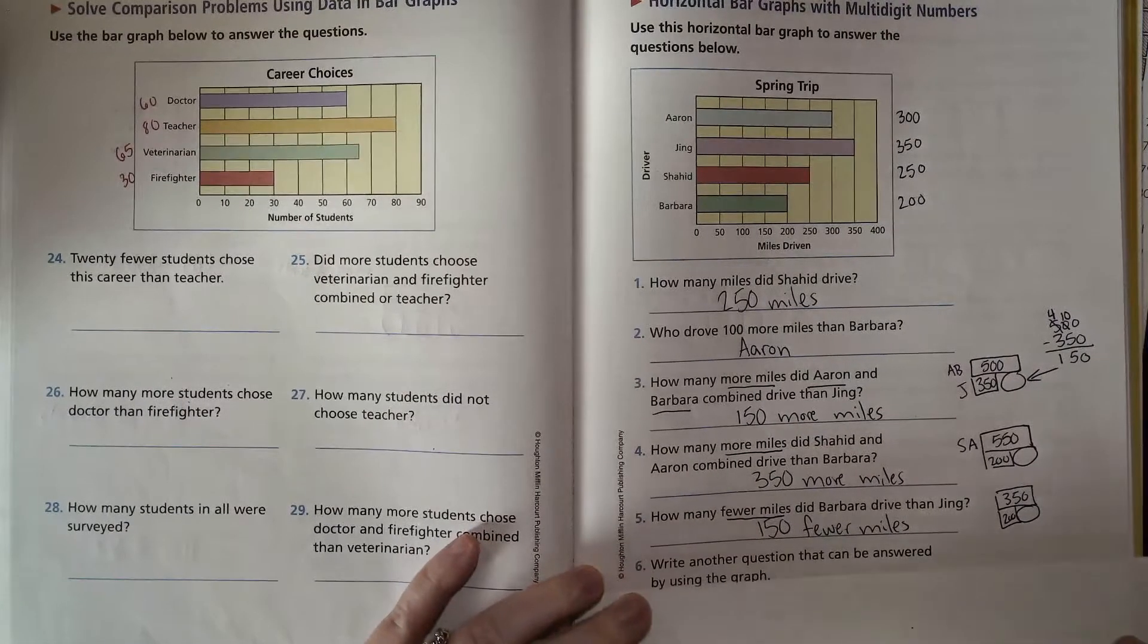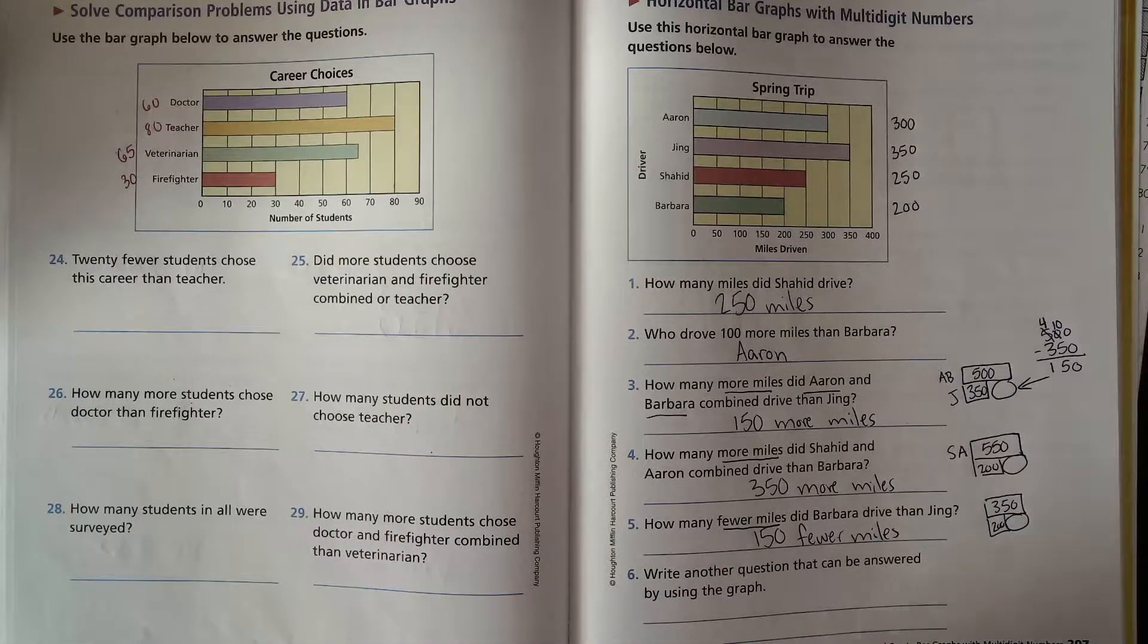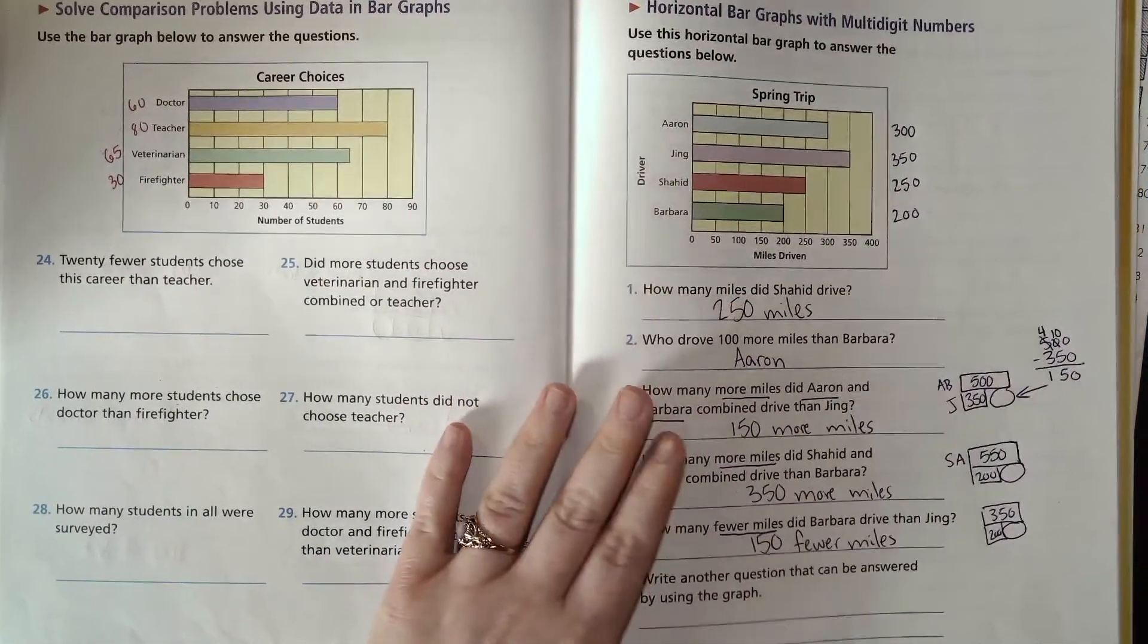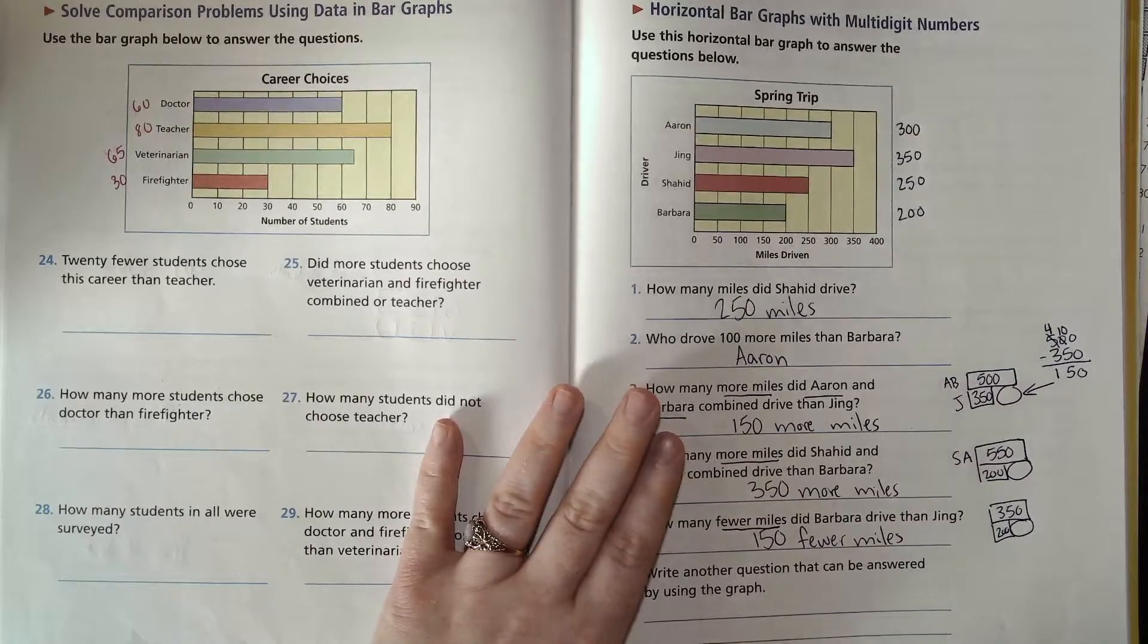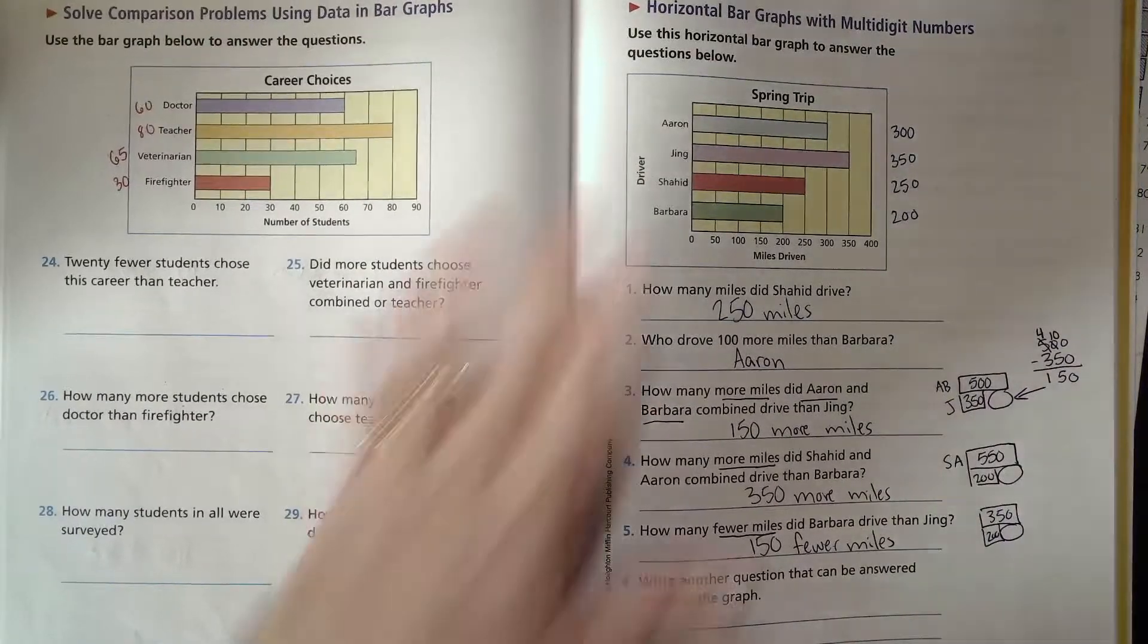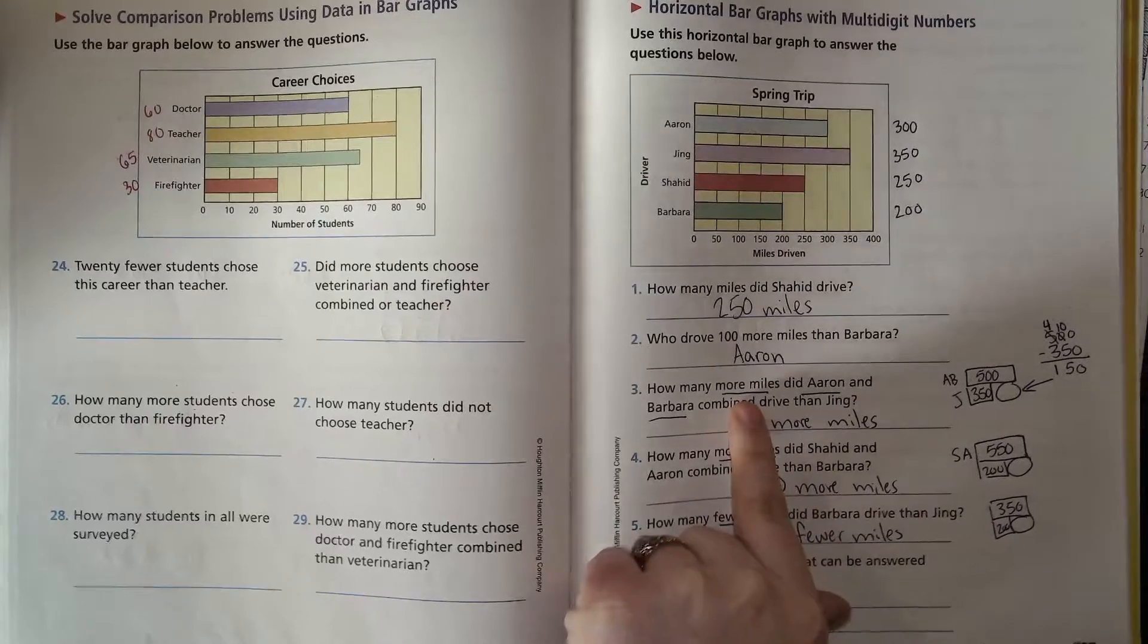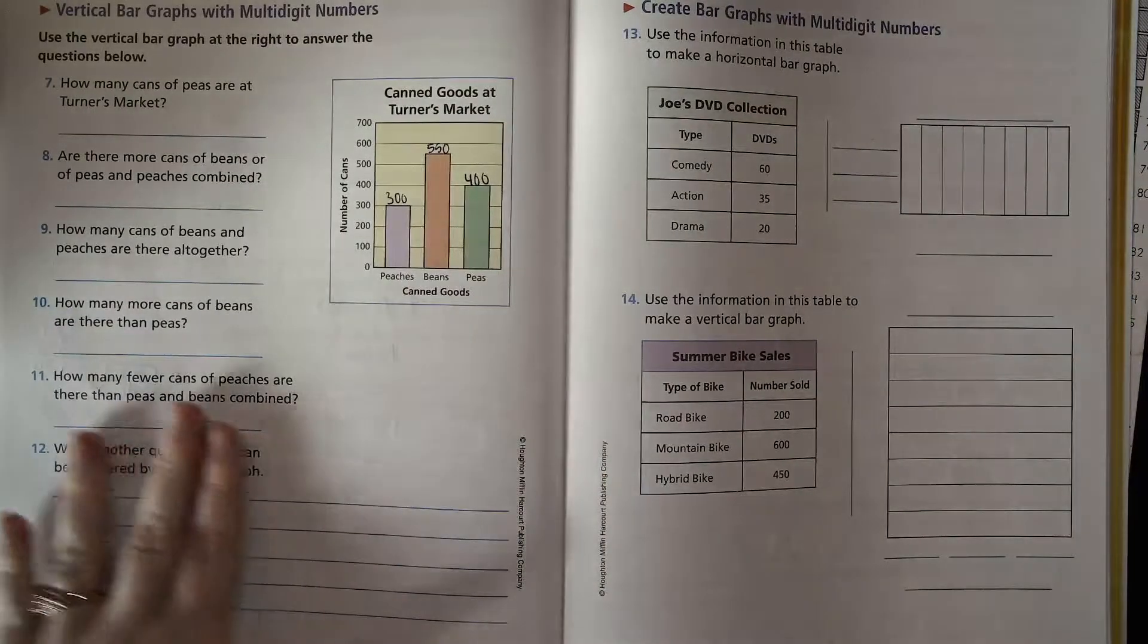And then you can go ahead and think of another question that you could ask based on looking at the graph. So maybe how many miles did the people drive in all, which two drivers drove the least, which two drivers drove the most. All these sorts of questions will make sense. And make sure when you're answering you include the units, which you can find after the phrase how many.